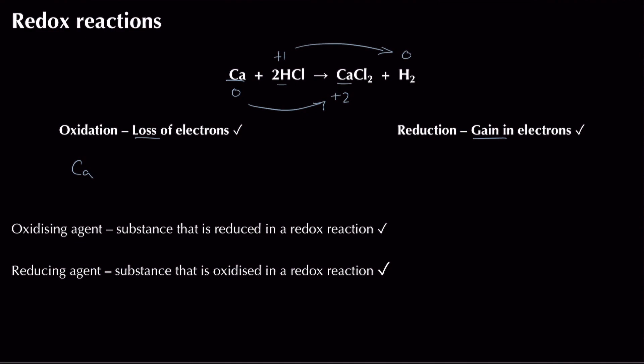Looking at chlorine: it has a minus one oxidation state on the left, and on the right as a chloride ion it also has a charge of minus one and hence an oxidation state of minus one. Nothing is changing, so we can leave that as it is. In terms of the element being reduced, we go with hydrogen.